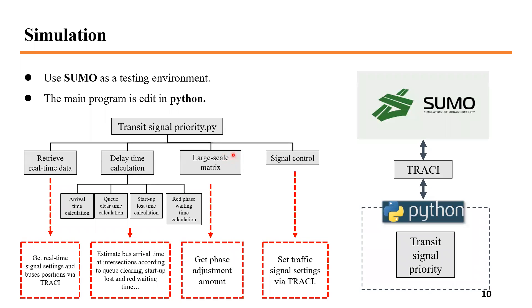After the control strategy, here comes the simulation framework. The main program is coded in Python and tested in SUMO. TraCI is used to communicate between SUMO and the Python program. Several functions are defined to get real-time data and compute arrival time with queue clearing time, startup loss time, and red phase waiting time, as well as to get phase adjustment amounts from the large-scale matrix and set traffic signal settings in the simulation.